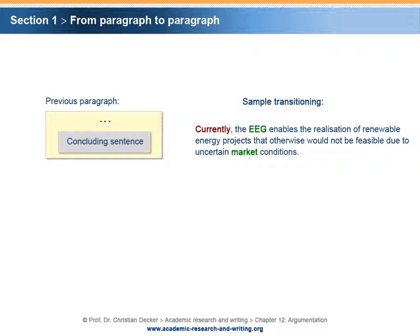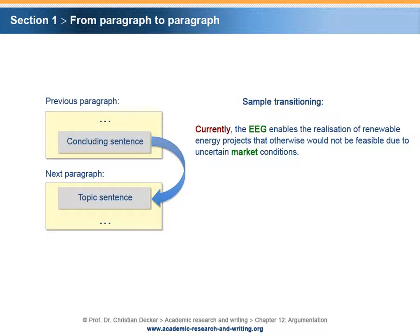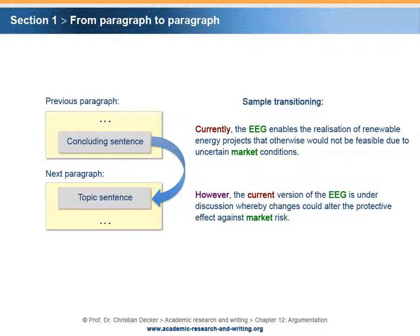Providing cohesion by transitioning between paragraphs has already been shown in our example. The paragraph ends with the concluding sentence: Currently, the EEG enables the realization of renewable energy projects that otherwise would not be feasible due to uncertain market conditions. Referring to this, the next paragraph could start with the following topic sentence: However, the current version of the EEG is under discussion whereby changes could alter the protective effect against market risk. The linguistic means to indicate the connection between the arguments of the previous and the next paragraph and to provide cohesion within the text are: using the adverb 'currently' and restating the word 'current'; starting the next paragraph with the transitional adverb 'however'; and restating key terms such as EEG and market.